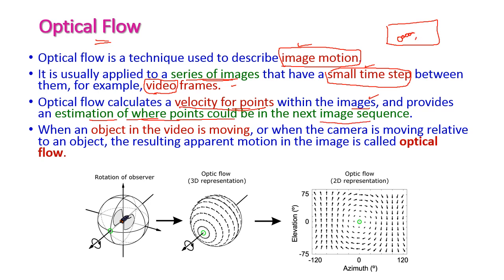Initially an object is at one position, and in the next image sequence we observe where it has moved. When an object in the video is moving, or the camera is moving relative to the object, the resulting movement is computed using optical flow.